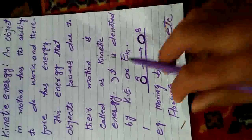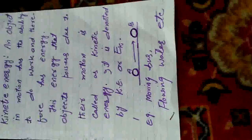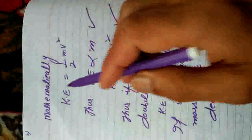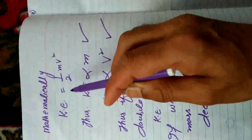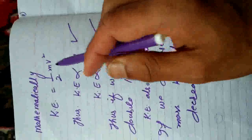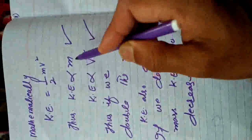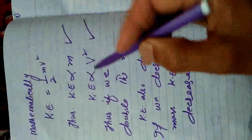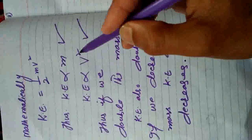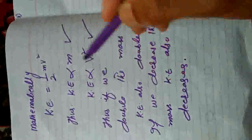We can say that flowing water possesses kinetic energy. Mathematically, kinetic energy is equal to half of mv squared — that is, KE = ½mv². From this expression we know that kinetic energy is directly proportional to mass and directly proportional to v squared, that means the square of velocity.